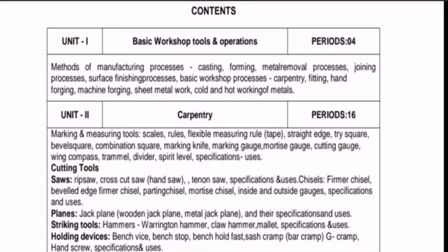This is the syllabus of workshop technology in the 1st year of Diploma of Mechanical Engineering. So this covers different processes and manufacturing processes. Till now we covered casting, forming, metal removal processes, joining processes, surface finishing processes.